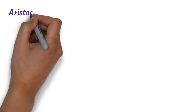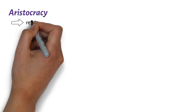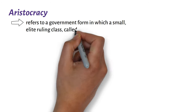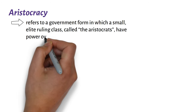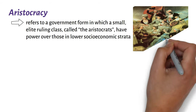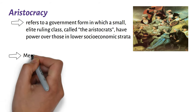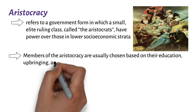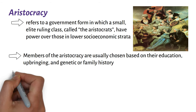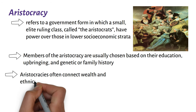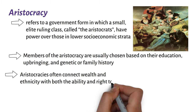On Aristocracy. Aristocracy refers to a government form in which a small, elite ruling class, called the aristocrats, have power over those in lower socioeconomic strata. Members of the aristocracy are usually chosen based on their education, upbringing, and genetic or family history. Aristocrats often connect wealth and ethnicity with both the ability and right to rule.